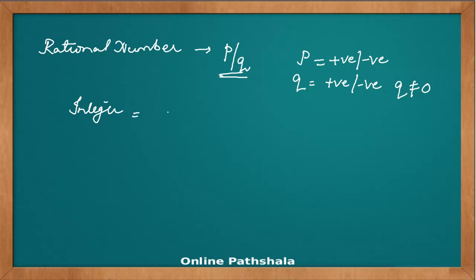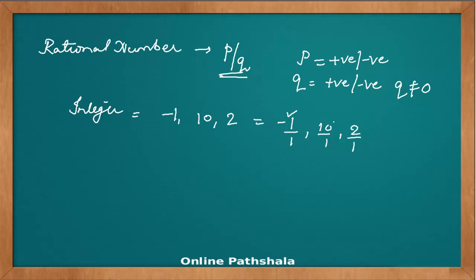An integer like minus 1, plus 10, or 2 can be represented as minus 1 by 1, 10 by 1, or 2 by 1. Here, the numerator P is a negative number and Q is a positive number — that satisfies the definition. For 10 by 1, both P and Q are positive — that also satisfies the definition. So integers are included in rational numbers; integers are rational numbers.